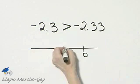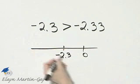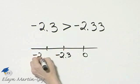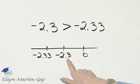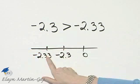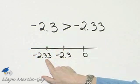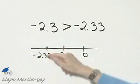If this is greater, we want to know if negative 2 and 3 tenths is to the right of negative 2 and 33 hundredths. Now you can either see that it's to the right because the absolute value of this number is actually greater, so it would fall to the left.